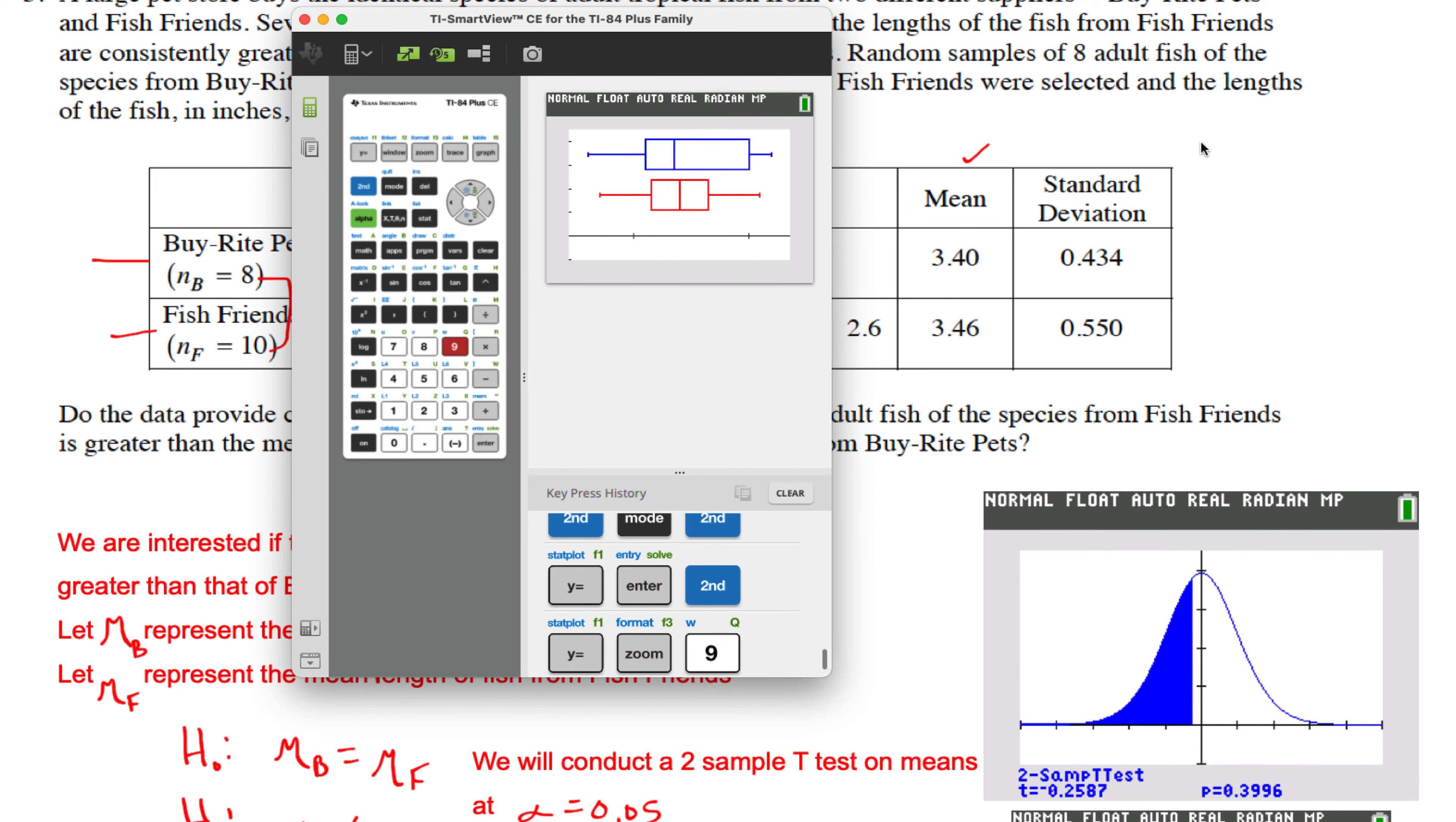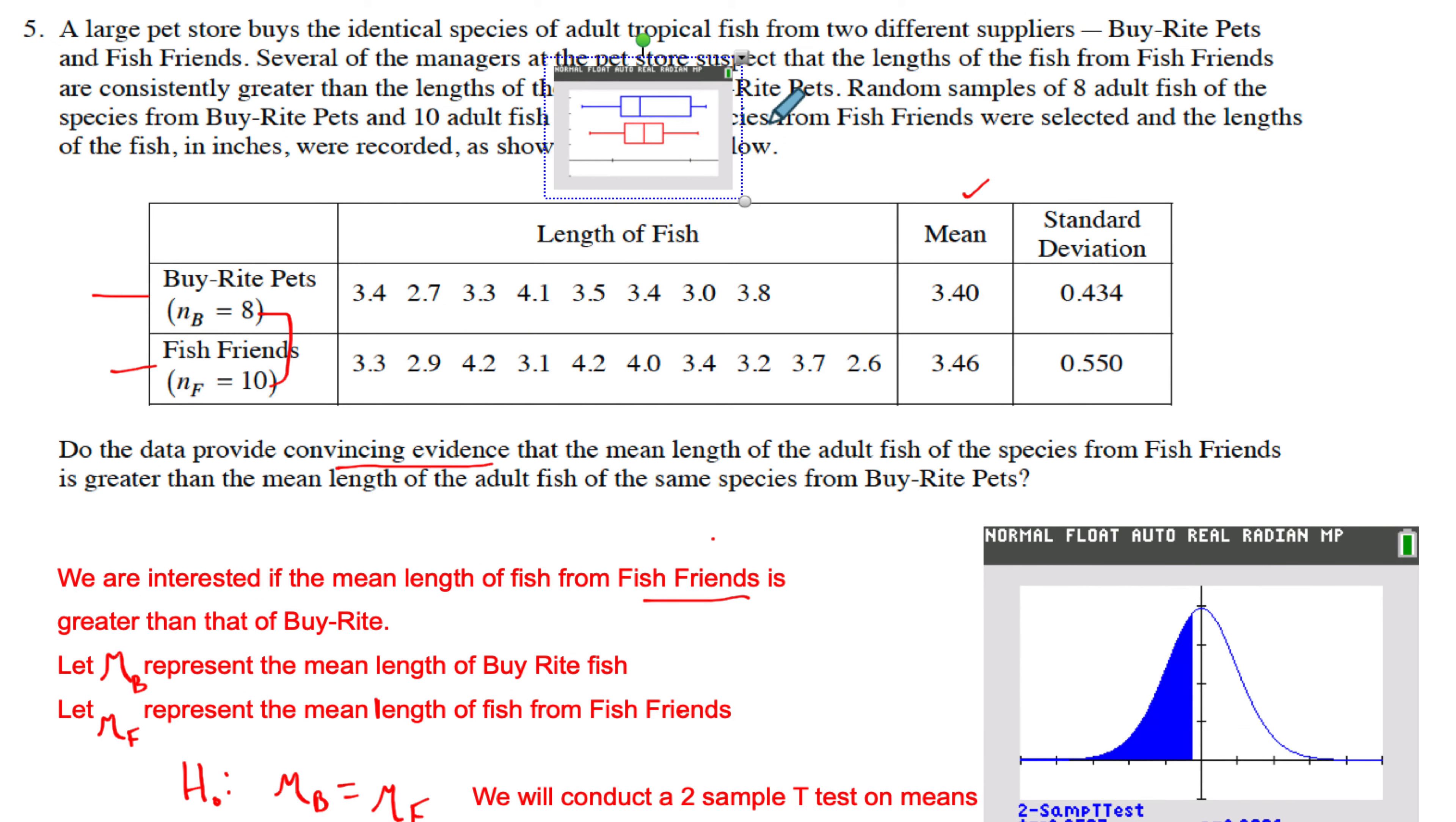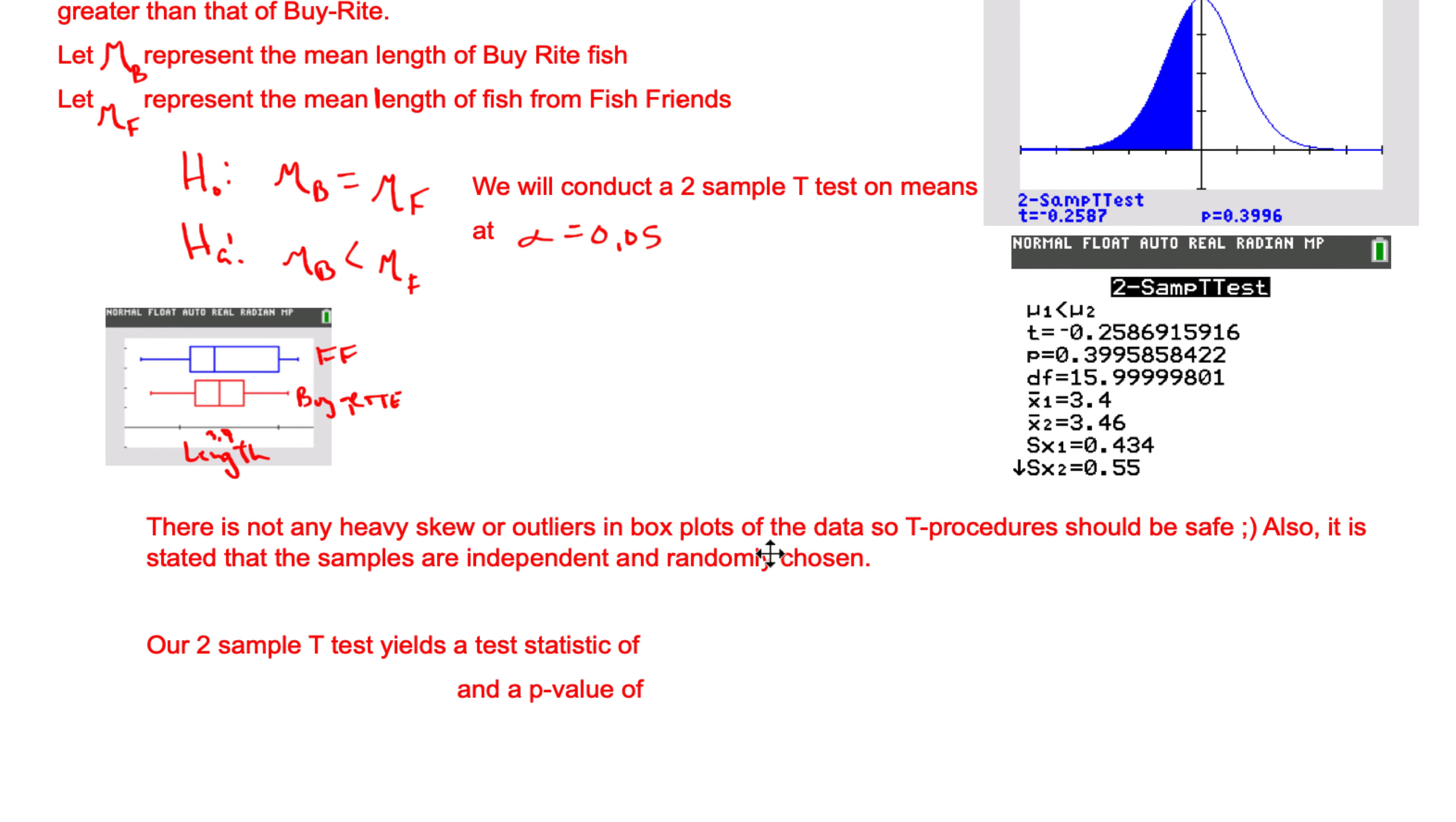Here is the box plot to check for normality. Let me put it right here. So there is not any heavy skew or outliers. The box plot looks good, so t-procedures should be safe. Also, it's stated that the samples are independent and randomly chosen. So those are our conditions met. Good to go.